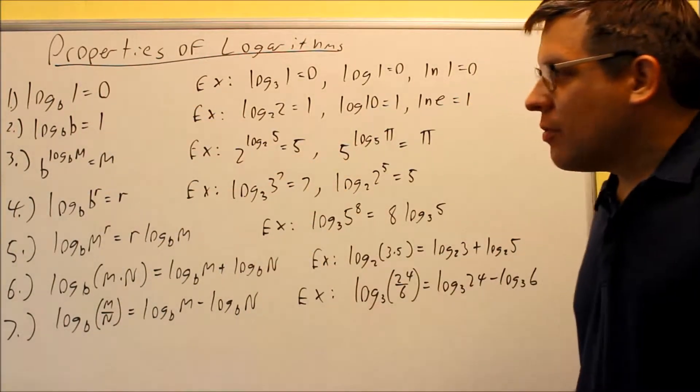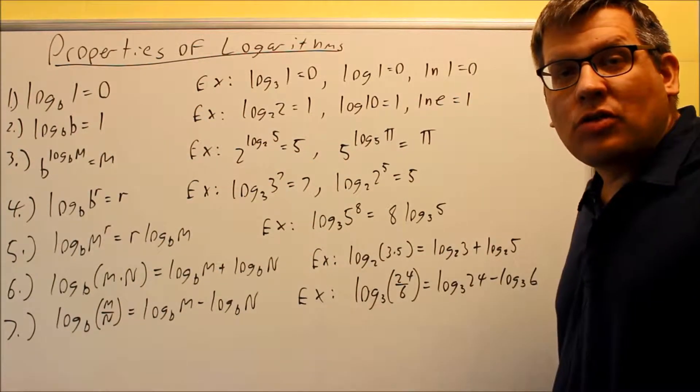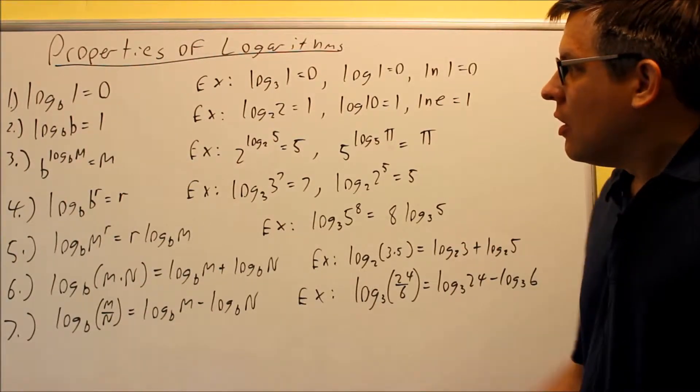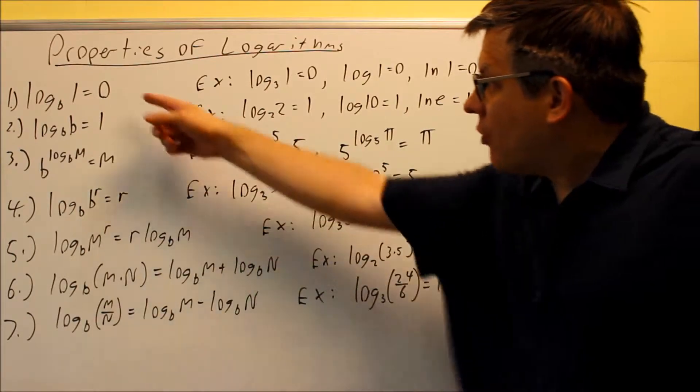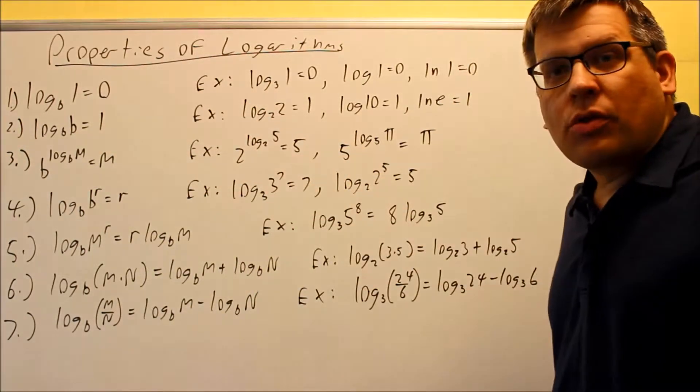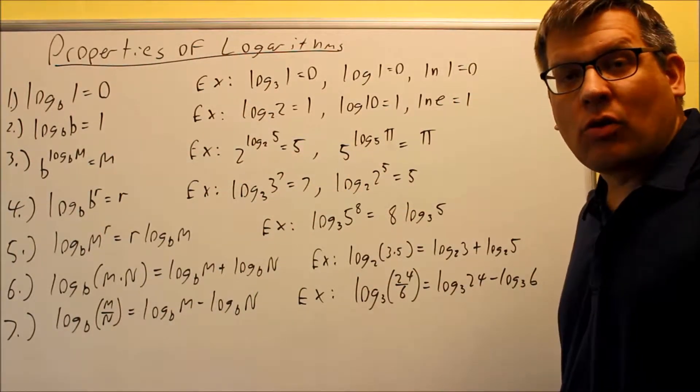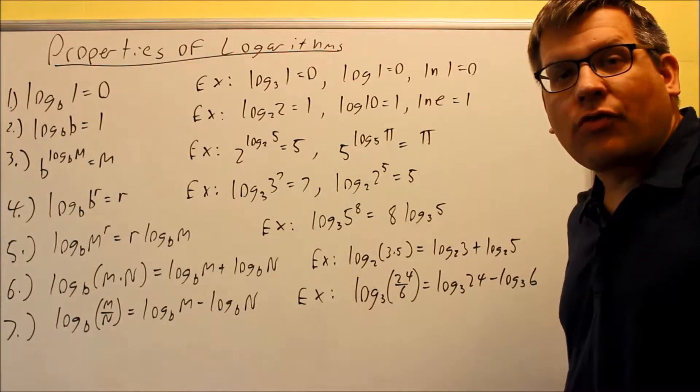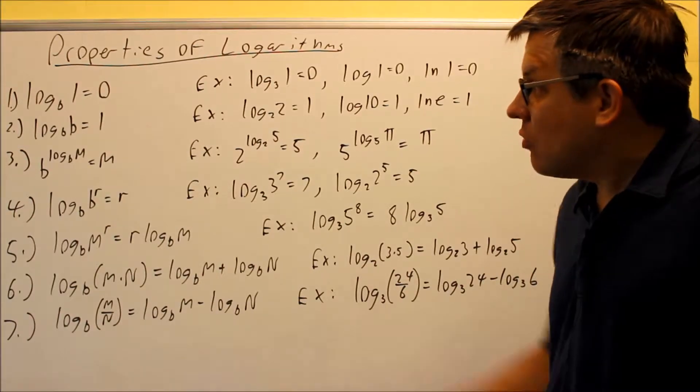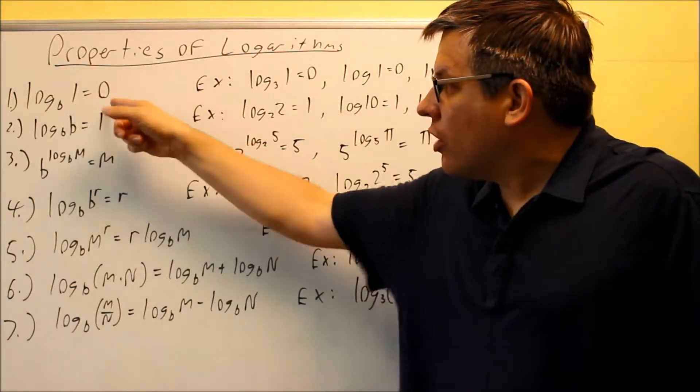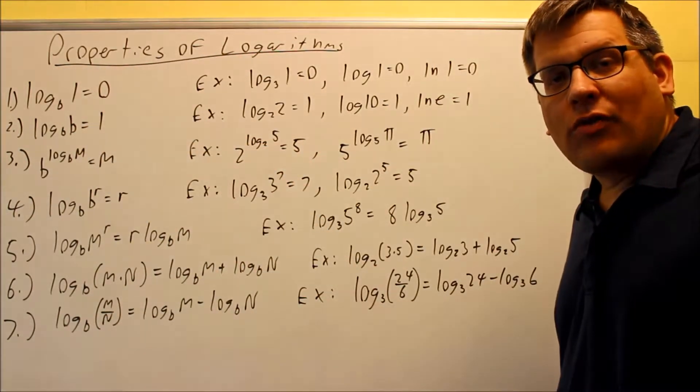The very first one, that's a B there, log base B, which means you can have any base. If we have a 1 after it, it automatically equals 0. That comes from the previous section on graphs. When you look at the graph of the log, it crosses the x-axis at (1,0). When you put 1 in there, you get 0 for the y value.